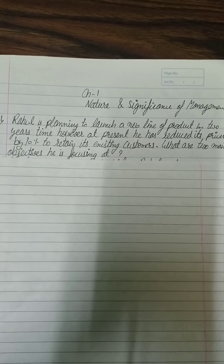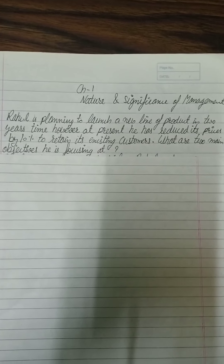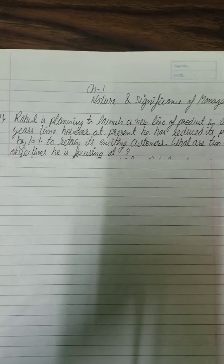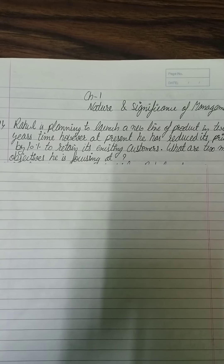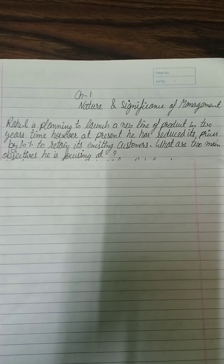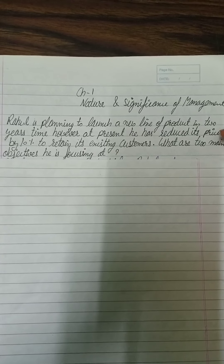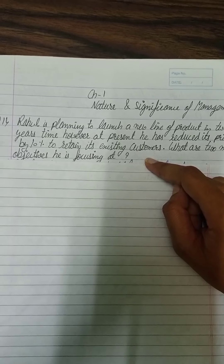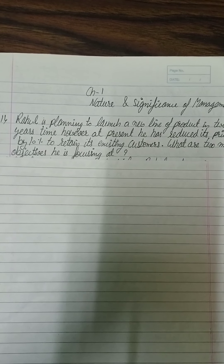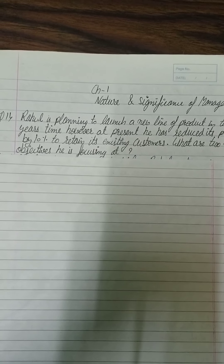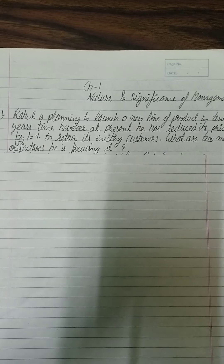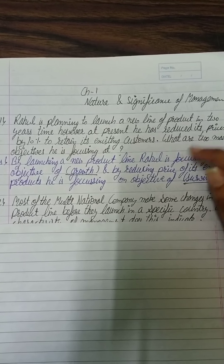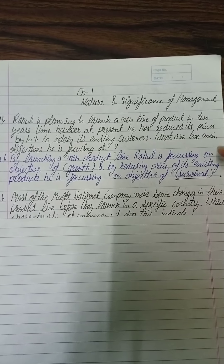Under organizational objectives there are three: survival, profit, and growth. Launching a new product line indicates growth. Reducing the price by 10% to retain existing customers indicates survival — he wants to keep his current customers. So the two answers are: growth (new product line) and survival (price reduction).